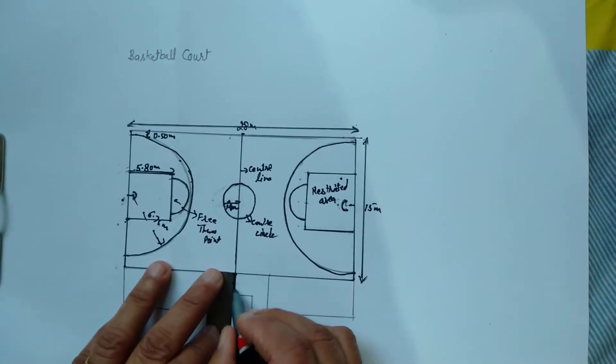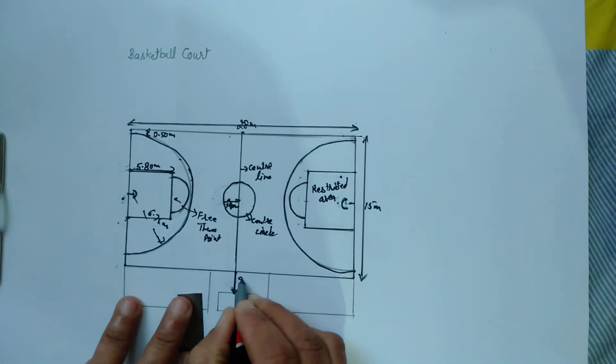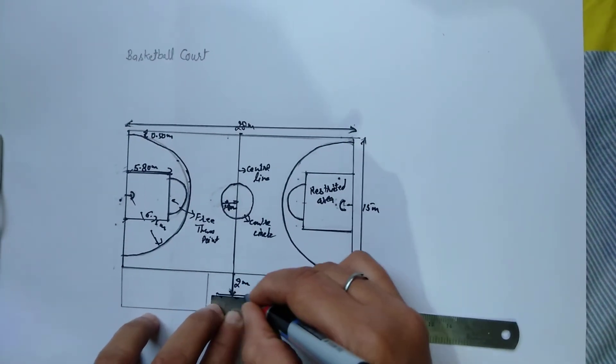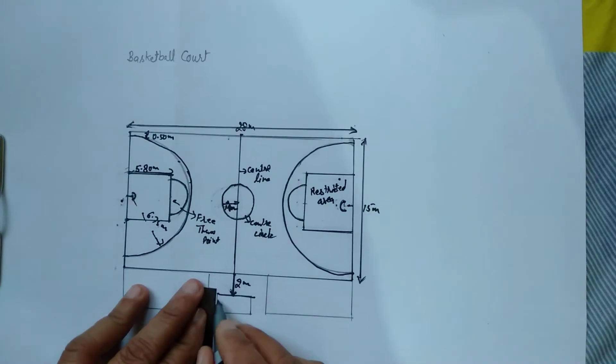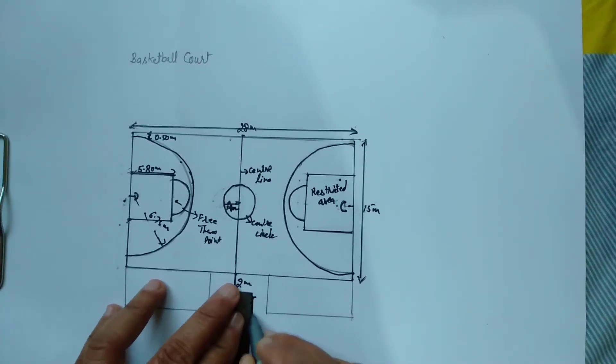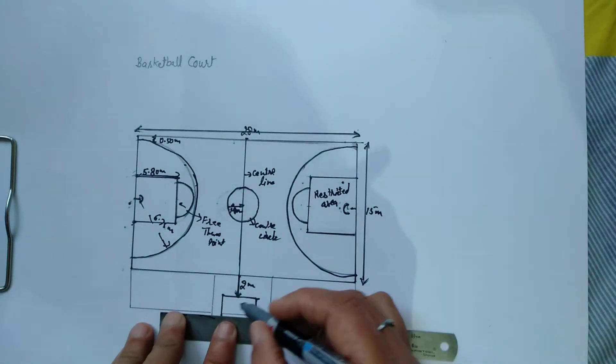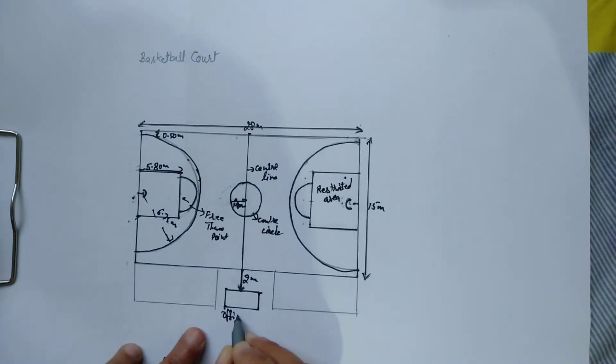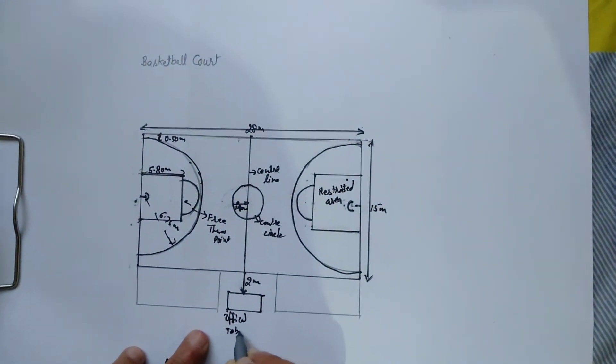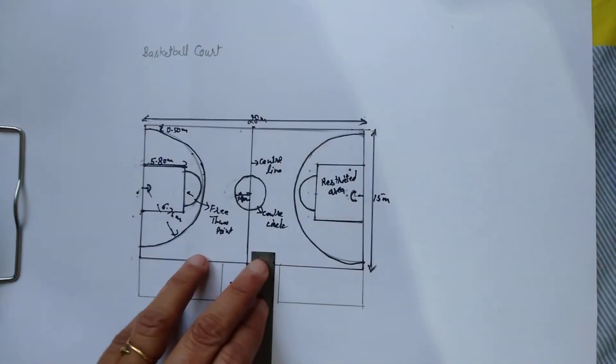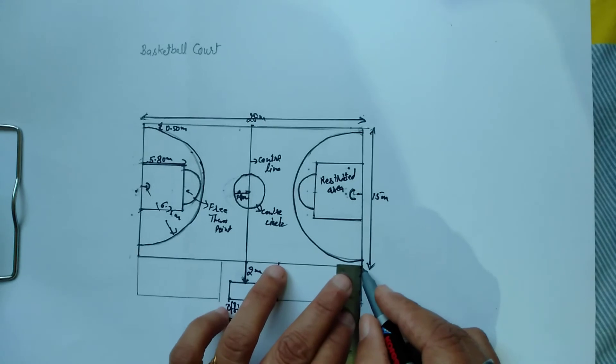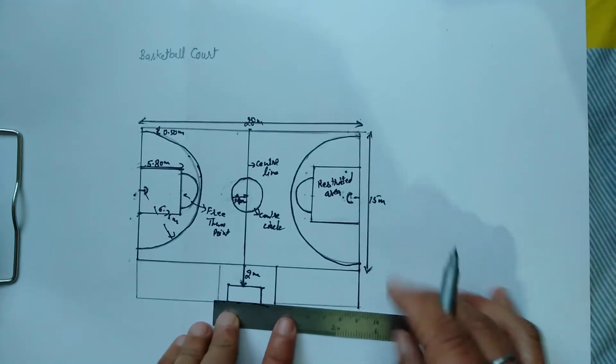This is the box for the official table. On the other side, this is the substitute bench.